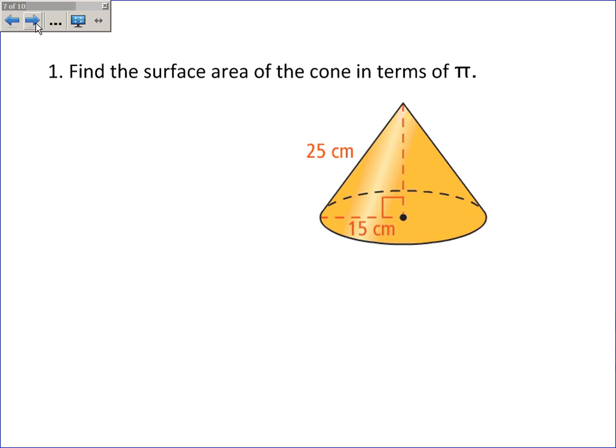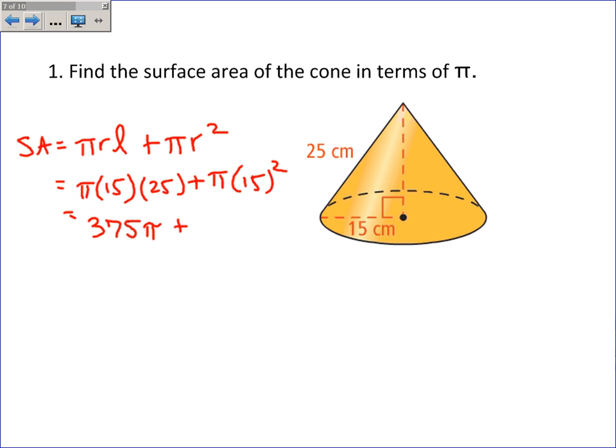Find the surface area of the cone in terms of pi. So the surface area is pi RL plus pi R squared. Pi, the radius is 15. The slant height is 25. The radius is 15 squared. So in terms of pi, I will kind of forget about pi for a second. 15 times 25 is 375. So it's 375 pi plus 15 squared is 225 pi. And I get 600 pi centimeters squared as my surface area.